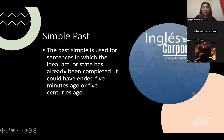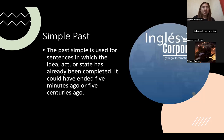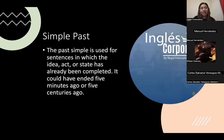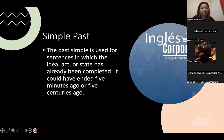We don't have a warm-up activity because we have too many things to make clear. So here we have simple past one more time. If we were having issues with the previous classes, we are going to understand everything today. The simple past tense is used for sentences in which the idea, act or state has already been completed. It could have ended five minutes ago or centuries ago.